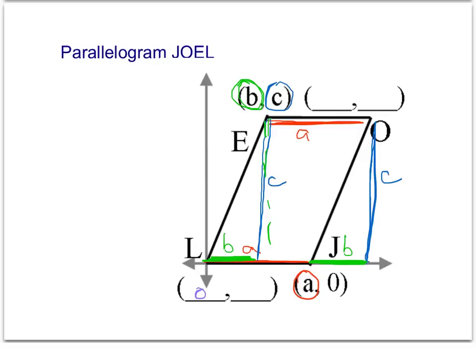I'll start with the origin, which is (0, 0) — that's point L. Then for point O, starting from the origin I go out a distance of a plus b horizontally and up c vertically, so point O is (a+b, c). I can check: the y values on top are both c, and the y values on the bottom are both zero. Also, the check that the two lower x values b and a add up to the upper x value a+b — since b plus a equals a plus b, that confirms it.